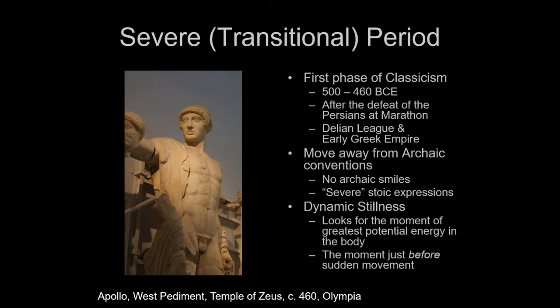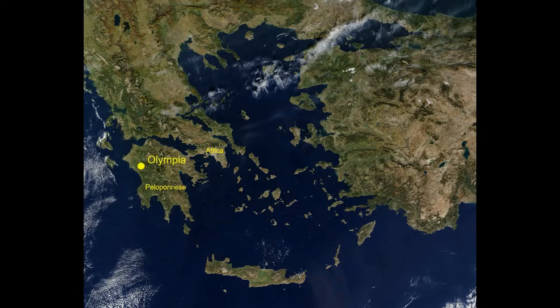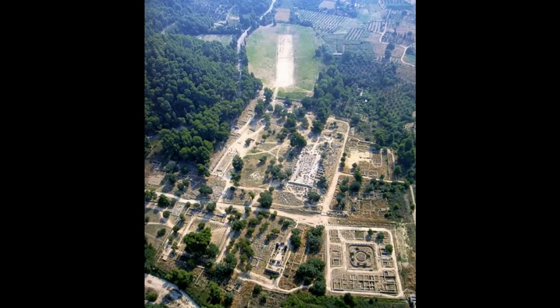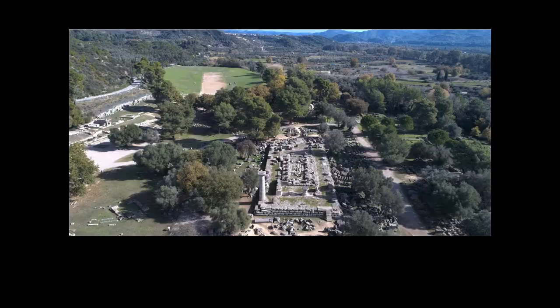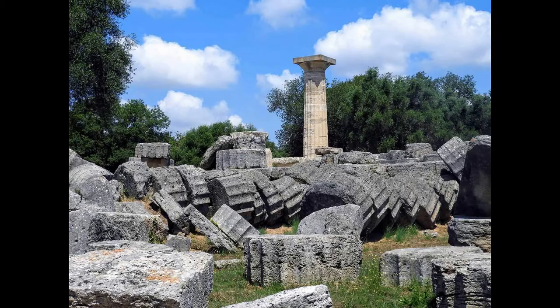The first phase of classicism happens from around the end of the Second Persian War until about the middle of the fifth century — the time of the Delian League, the alliance of Greek city-states to fight off the Persians, and the early Greek Empire under the Athenians. We're going to look first at Olympia, a beautiful location deep in the Peloponnesian Peninsula — the famed location of the Olympic Games, where they light the Olympic torch even today.